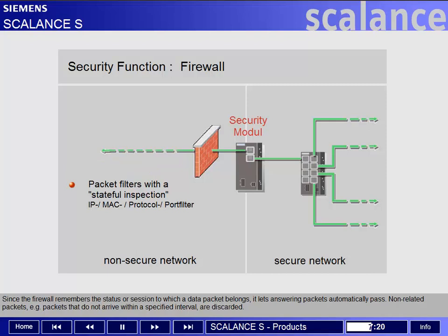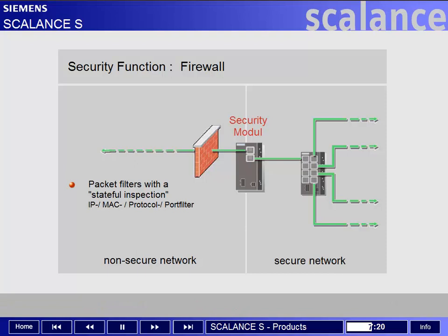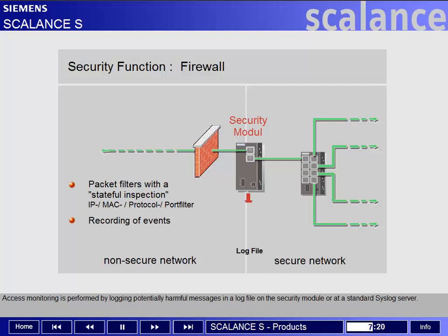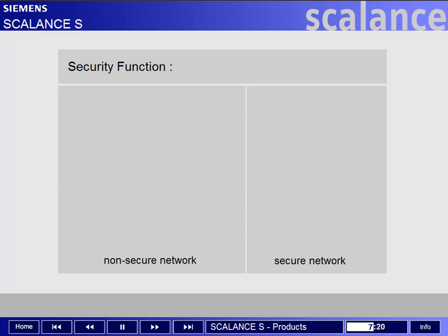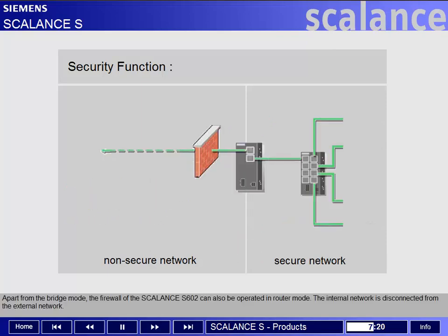Access monitoring is performed by logging potentially harmful messages in a log file on the security module or at a standard syslog server. Apart from the bridge mode, the firewall of the Scalance S602 can also be operated in router mode.